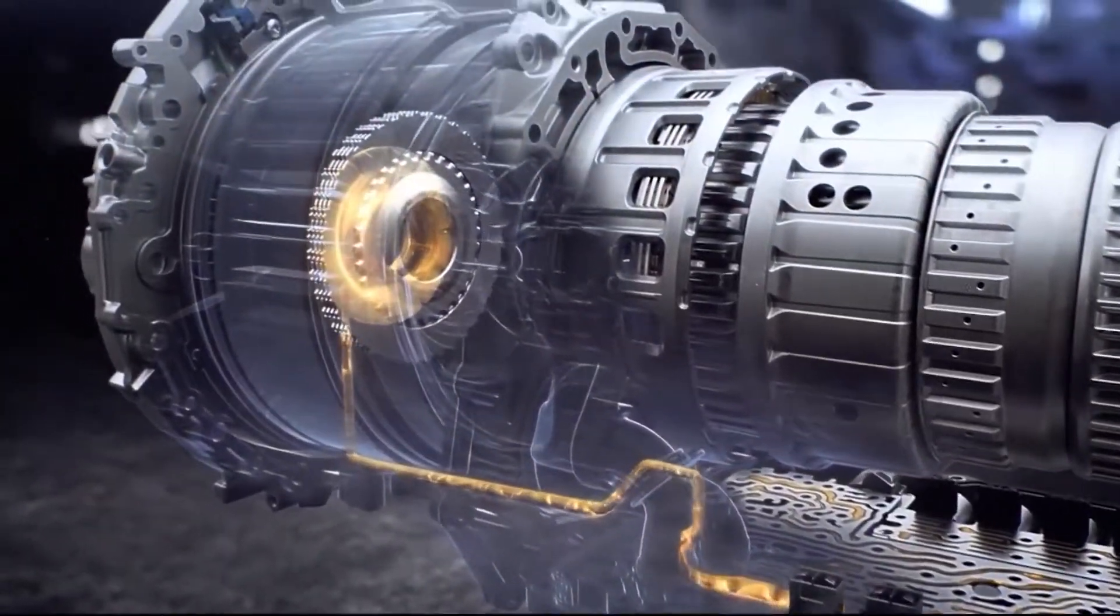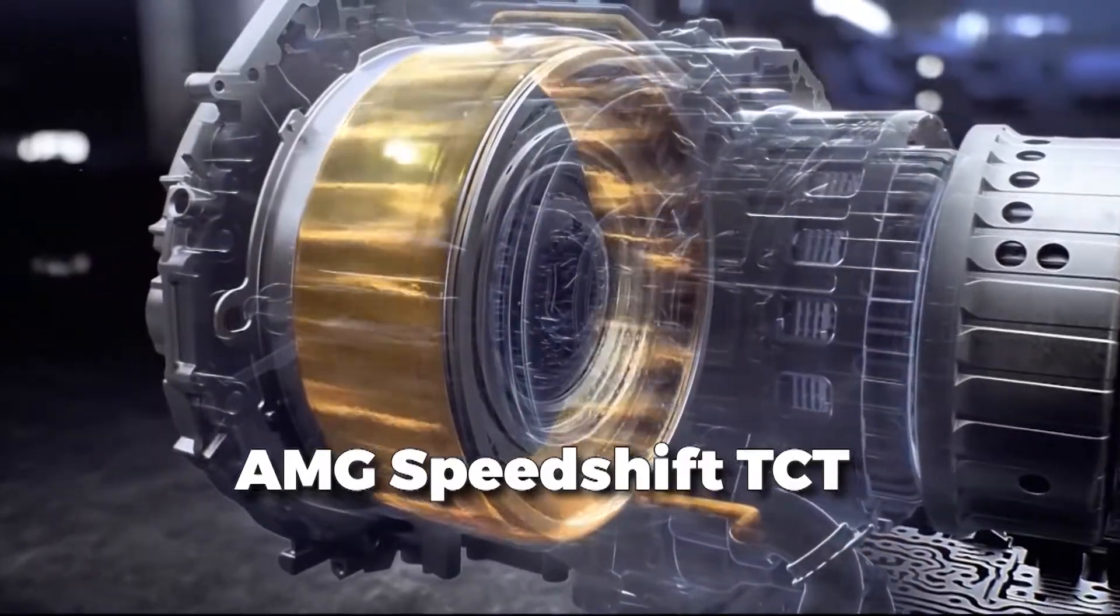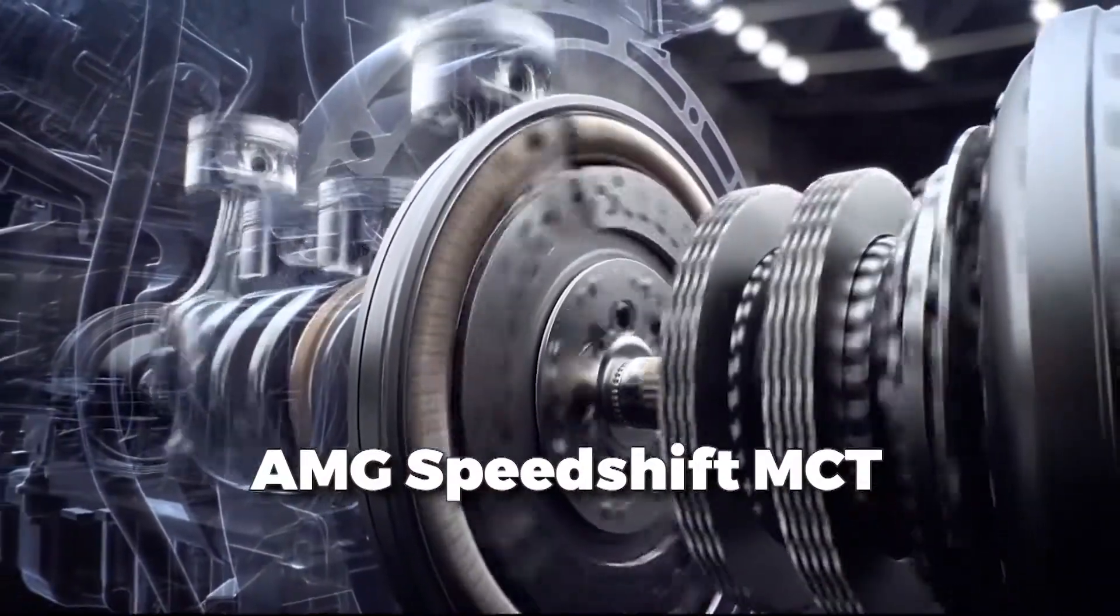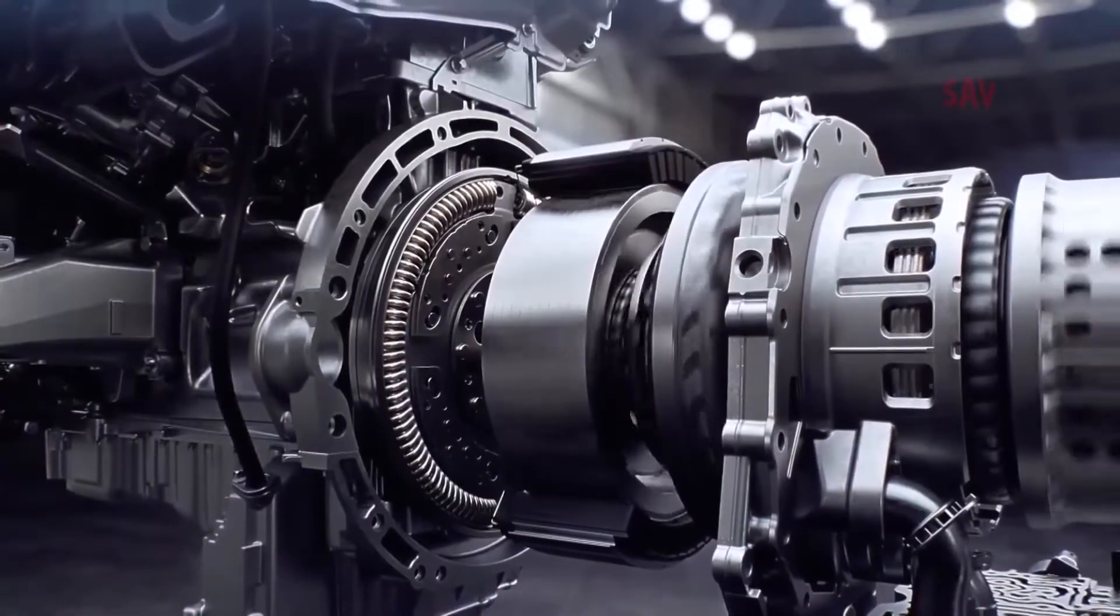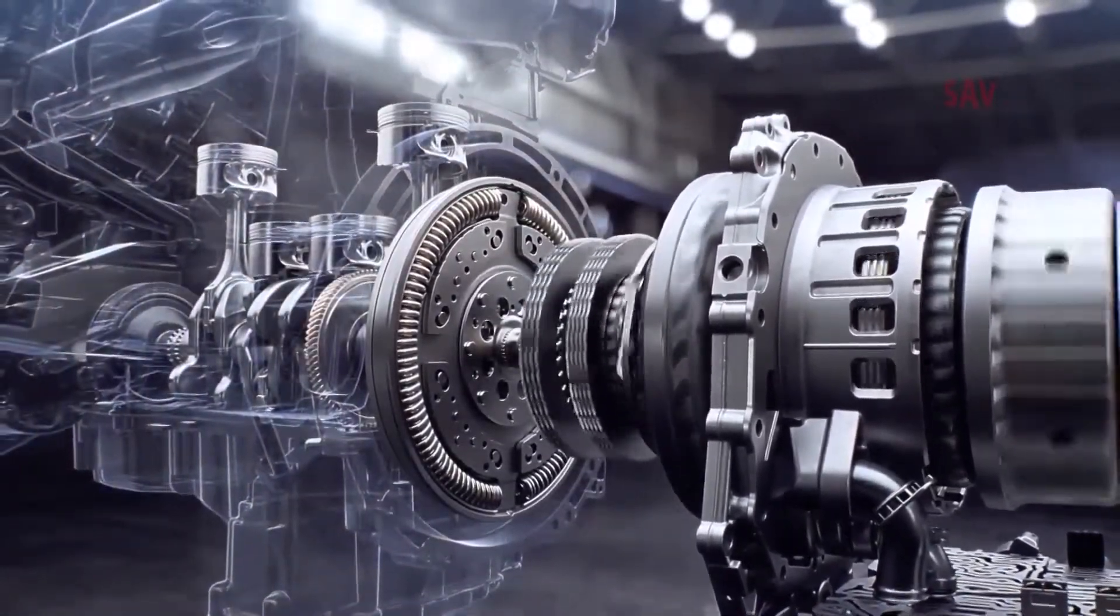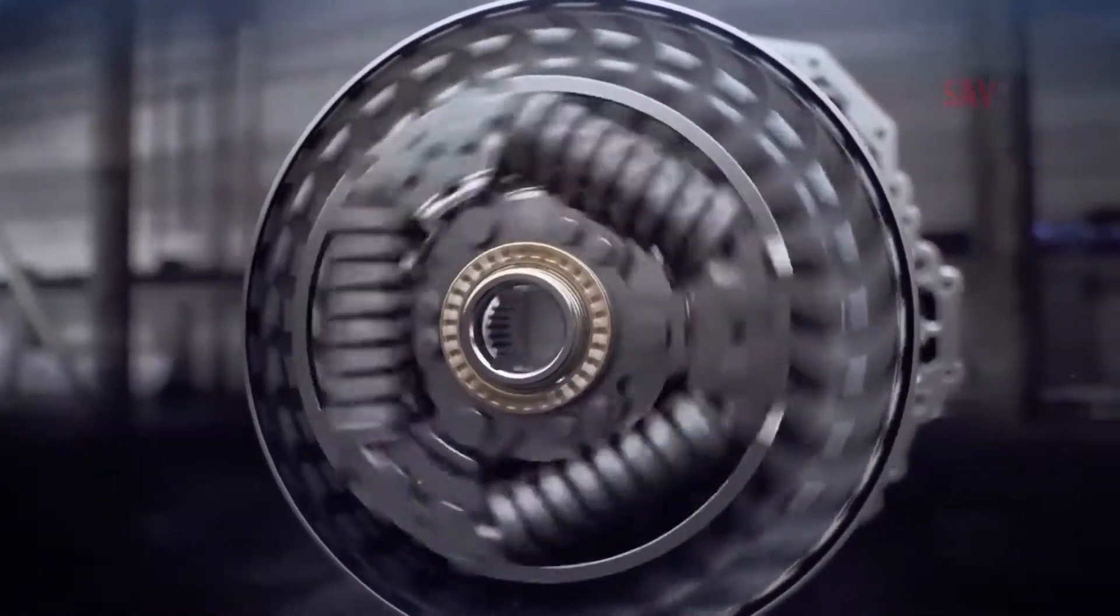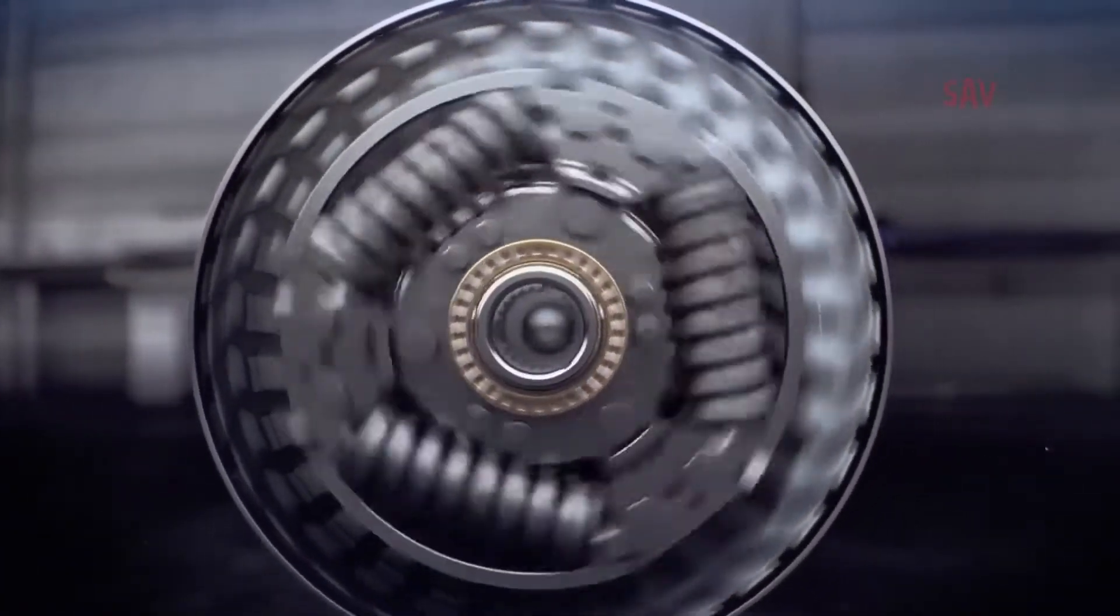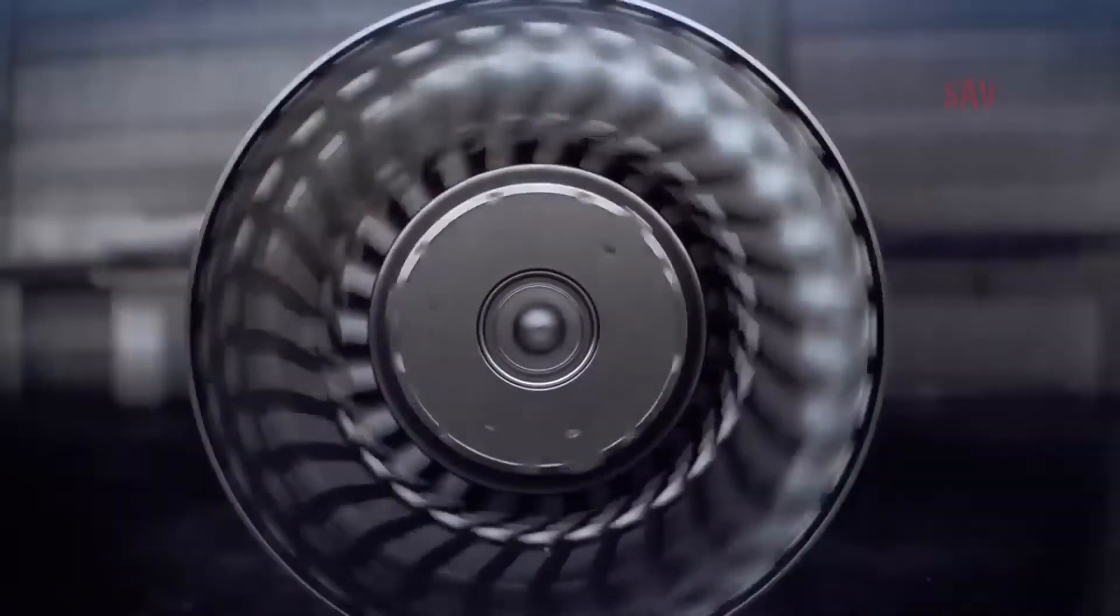Mercedes-Benz has also trademarked the AMG SpeedShift TCT and AMG SpeedShift MCT transmission technologies. The TCT uses a torque converter auto with a 9-speed or 7-speed gearbox, whereas the MCT is a multi-clutch technology with a wet clutch setup and, as the name suggests, is only found in AMG variants.